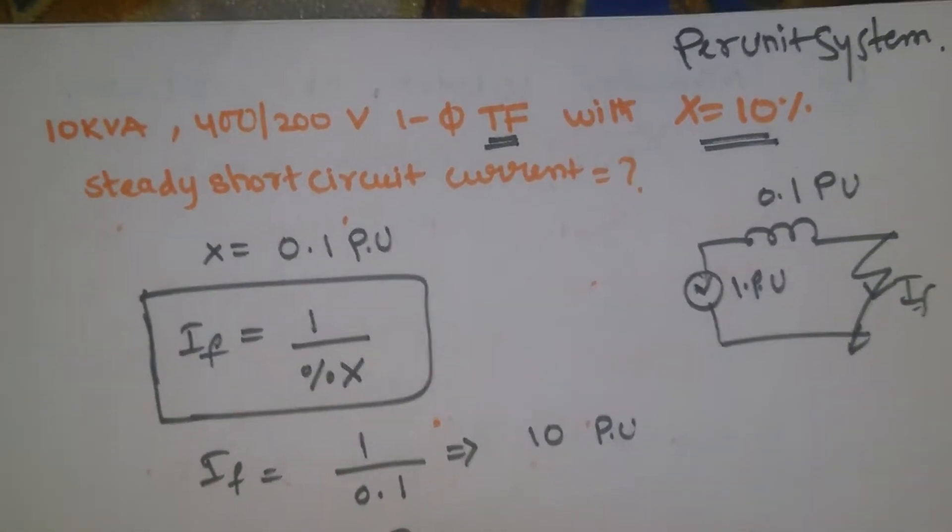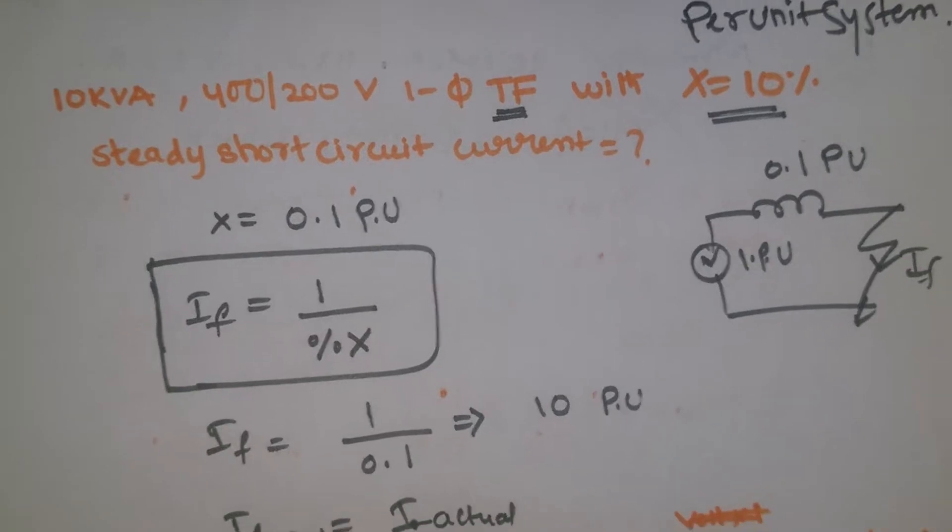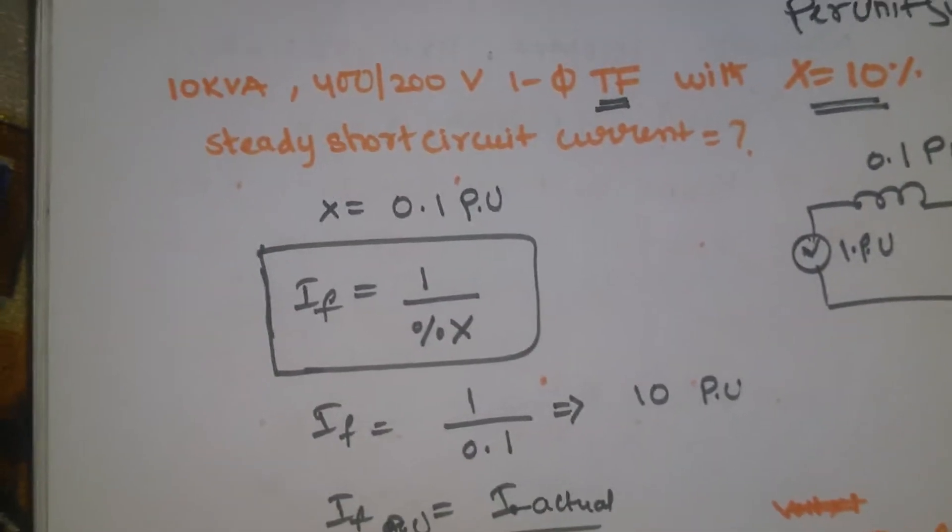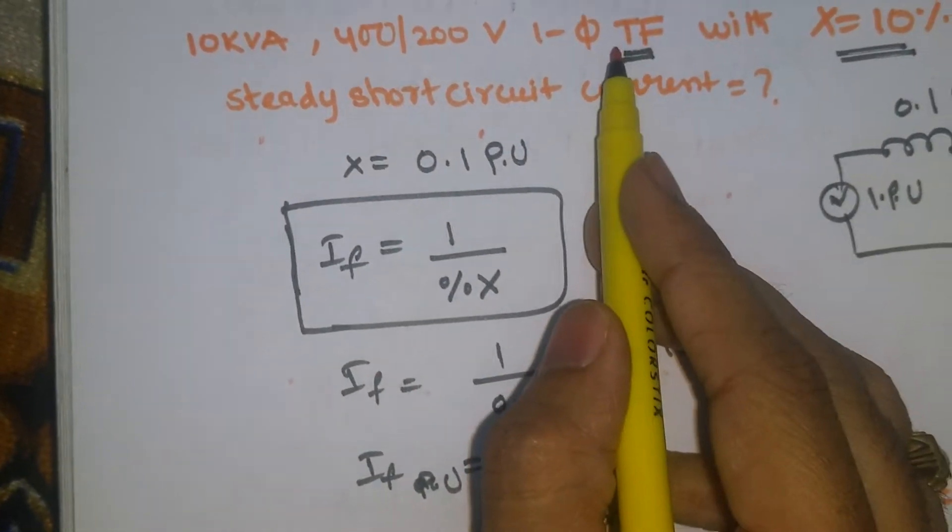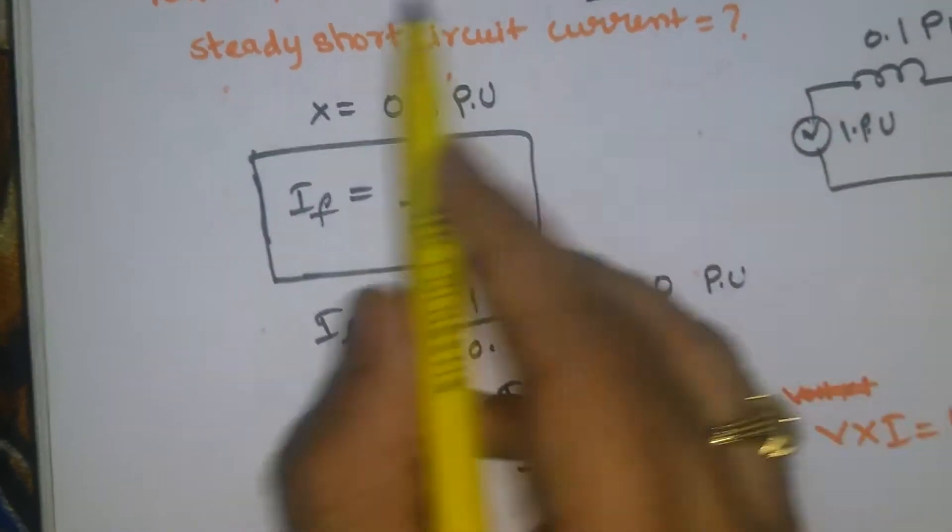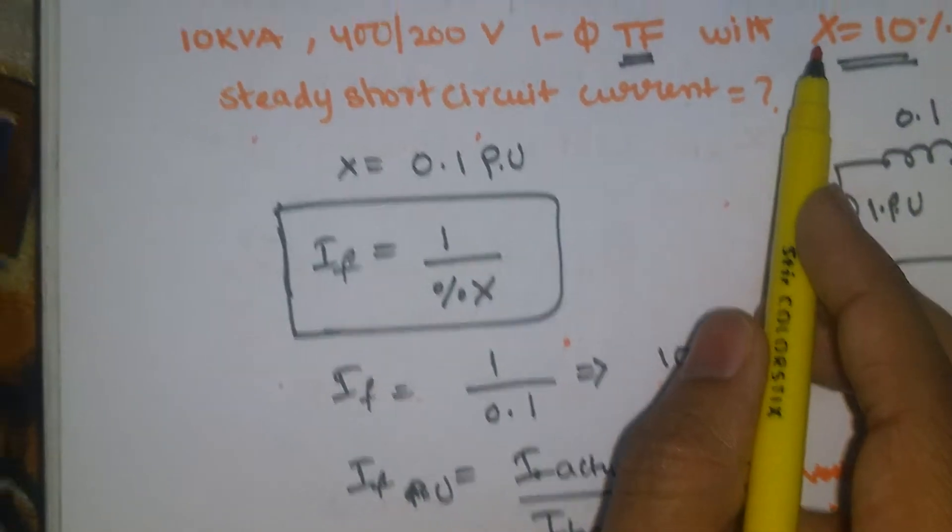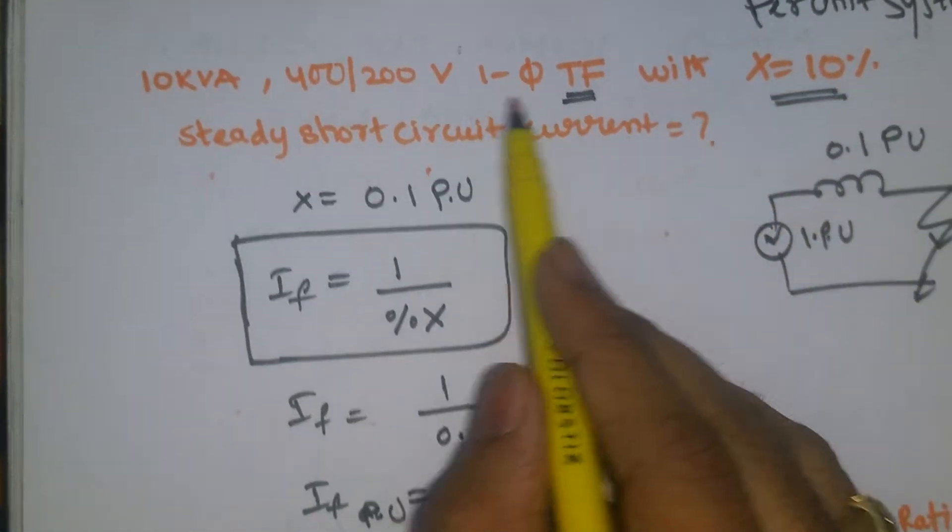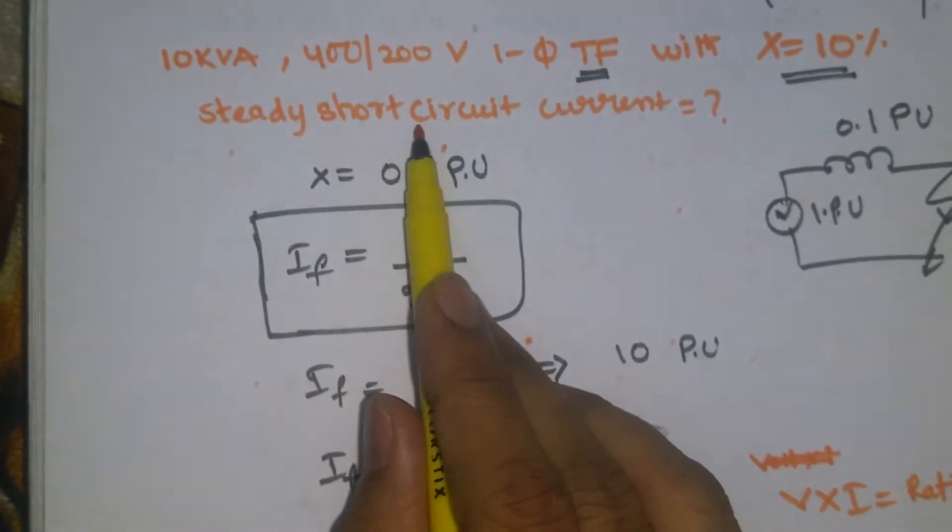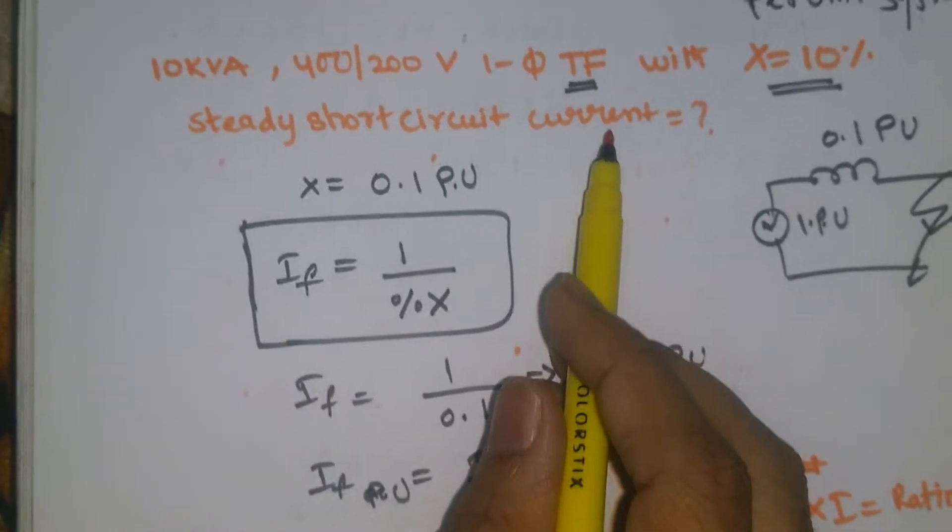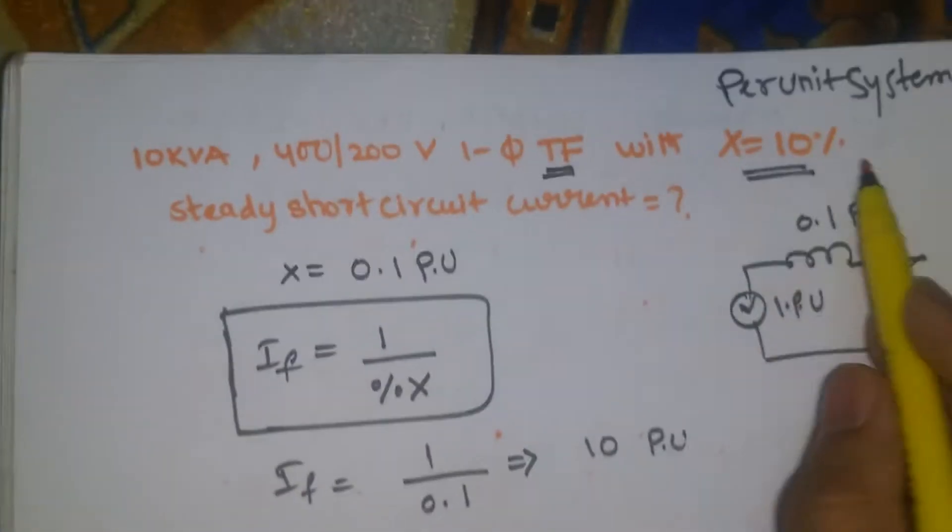Friends, welcome to my channel. Now I am discussing a problem regarding the per unit system. The problem is on transformers. First, read the question: 10 kVA, 400 by 200 volts single phase transformer with impedance of 10%, find out the steady short-circuit current in the transformer.